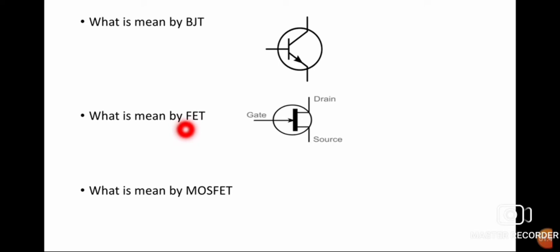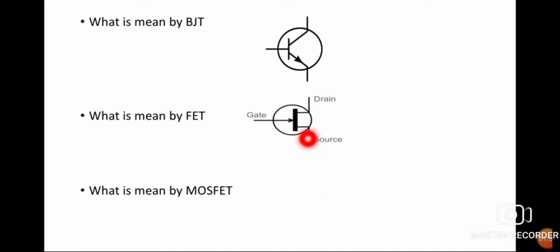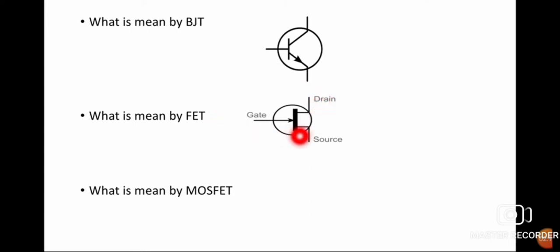The second component is FET — field effect transistor. The symbol of FET is also given here. It also has three terminals: source, gate, and drain. Source is where the charge particles are emitted. Drain is where the charge particles are collected and given outside. Gate is used to control the current through the channel from source to drain. In FET, input voltage is used to control the output current, which is why it is known as field effect transistor.